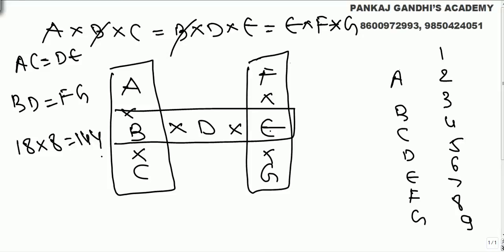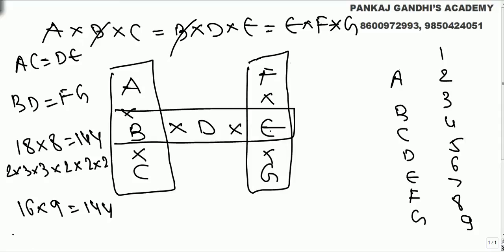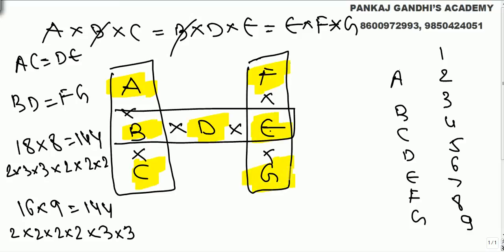When we say the product is equal, simply understand: 18×8 = 144 and 16×9 = 144 — numbers are different but the product is the same. However, when we say product is same, the prime factors have to be the same. So if the products of a·b·c, b·d·e, and e·f·g are all equal, the factors must match.